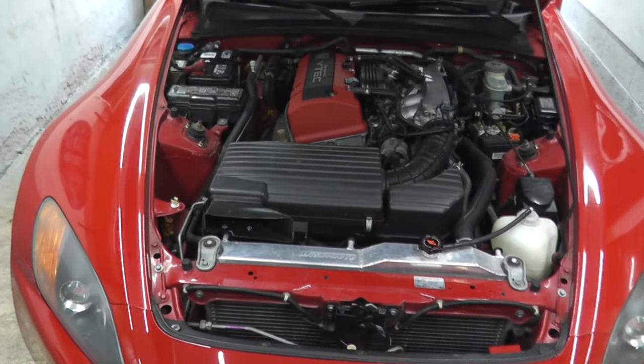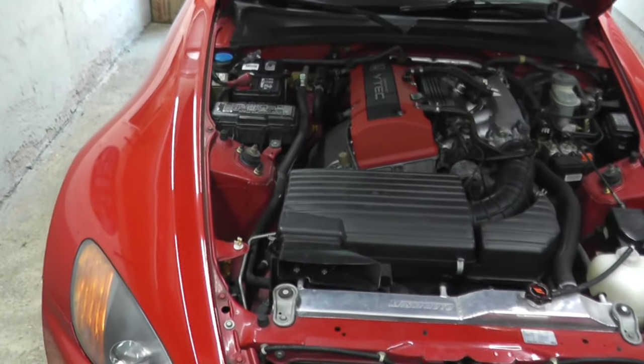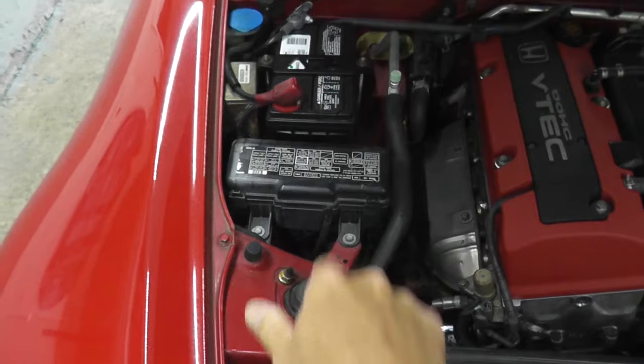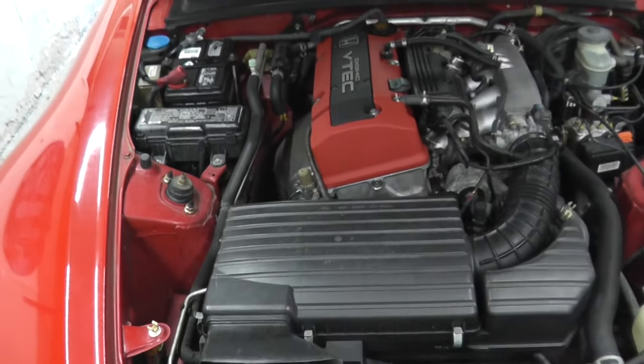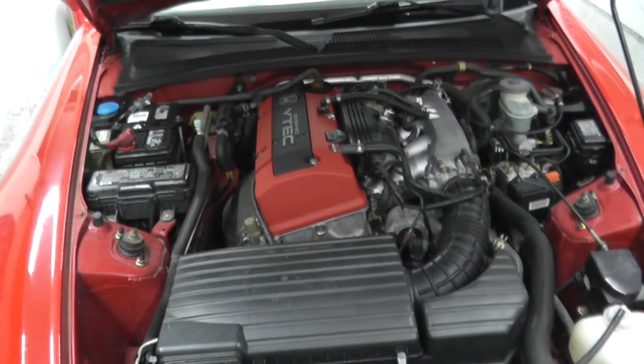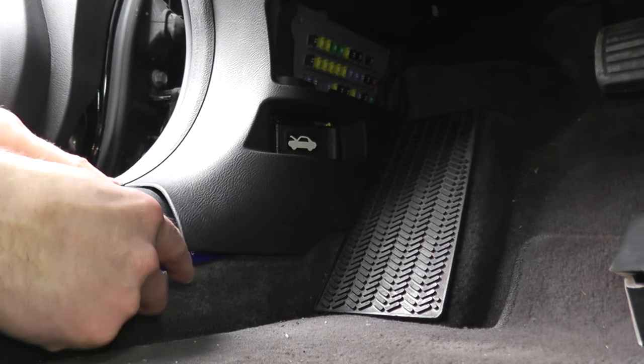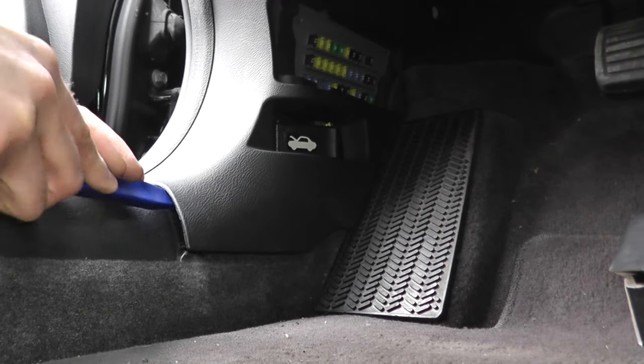Now here in the Honda, getting access to these relays is very simple. They're right underneath the hood on the passenger side compartment. Now if on your vehicle the relays live inside the cabin, typically you'll need to remove a plastic cover, as you can see here.